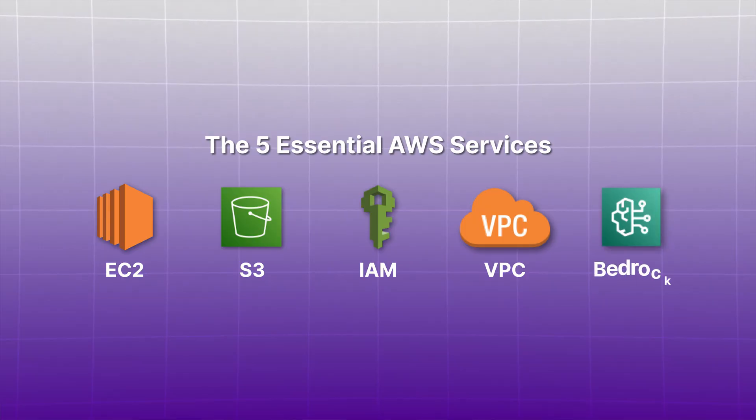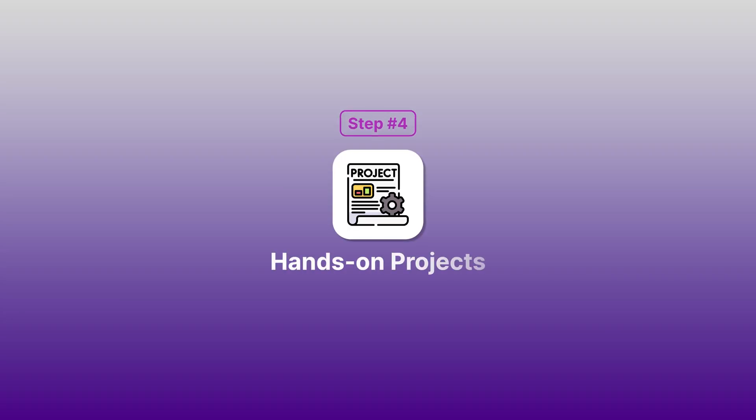With VPC, you decide how you structure your network, what can connect to what, and how everything communicates. Banks use VPCs to keep financial data secure; gaming companies use them to keep player data separate from admin systems. Then there's Amazon Bedrock, which represents the future of cloud computing — Amazon's way of making AI accessible to everyone. Instead of needing a team of AI experts, you can tap into pre-built AI models to add chatbots or analyze thousands of documents automatically.